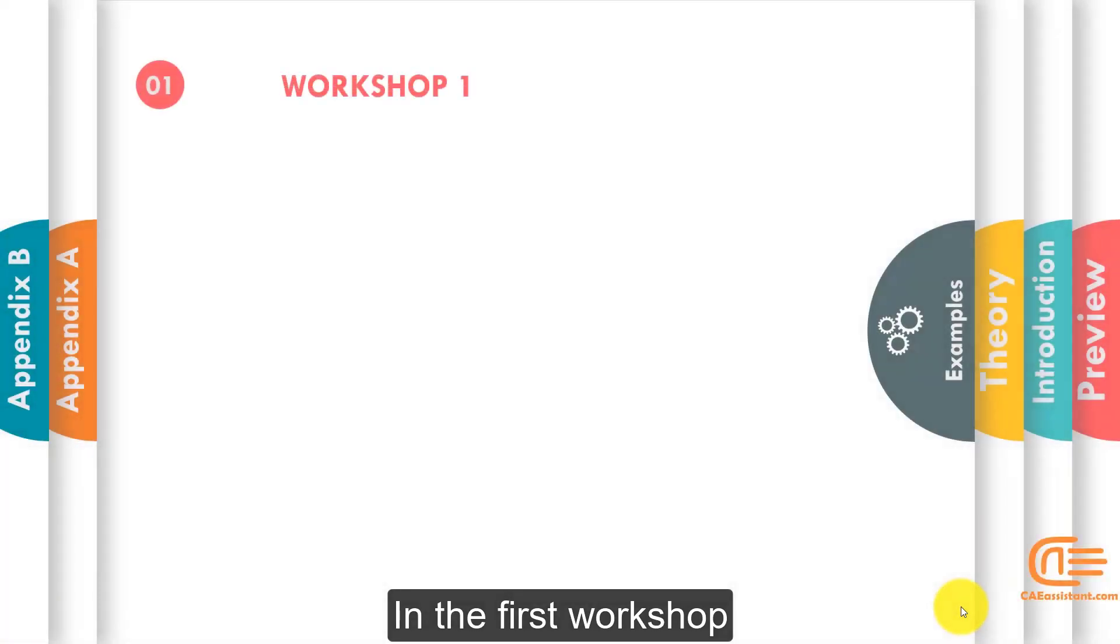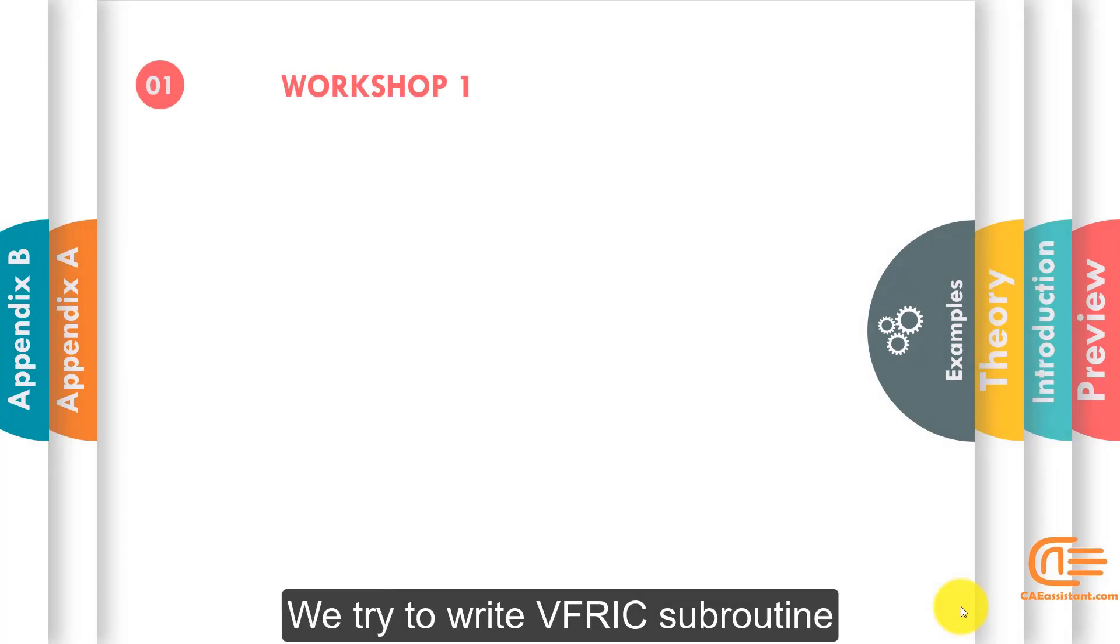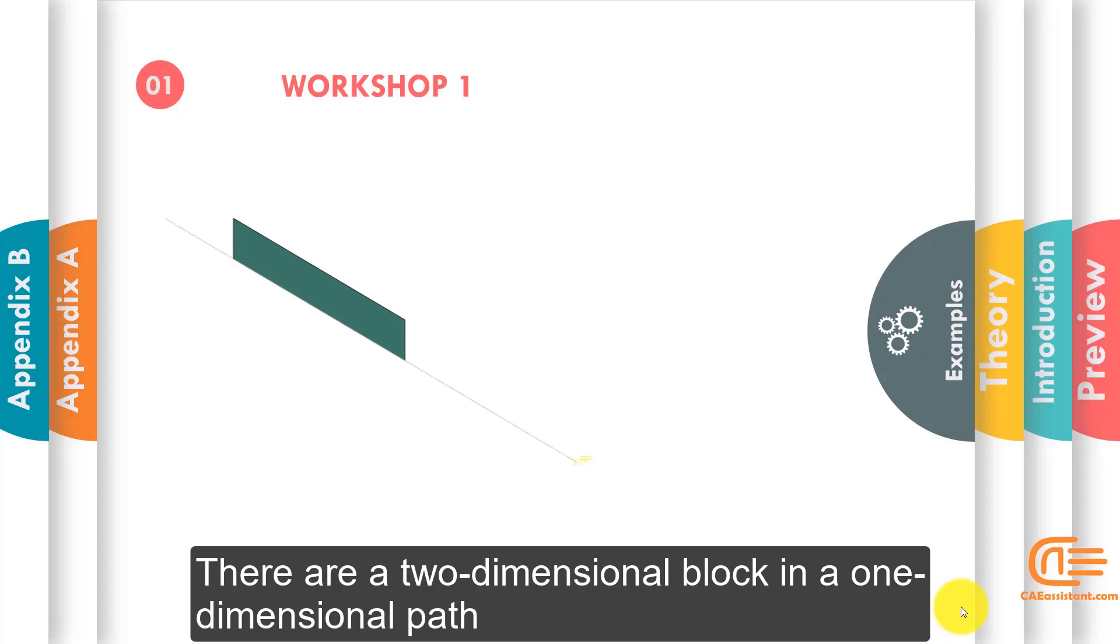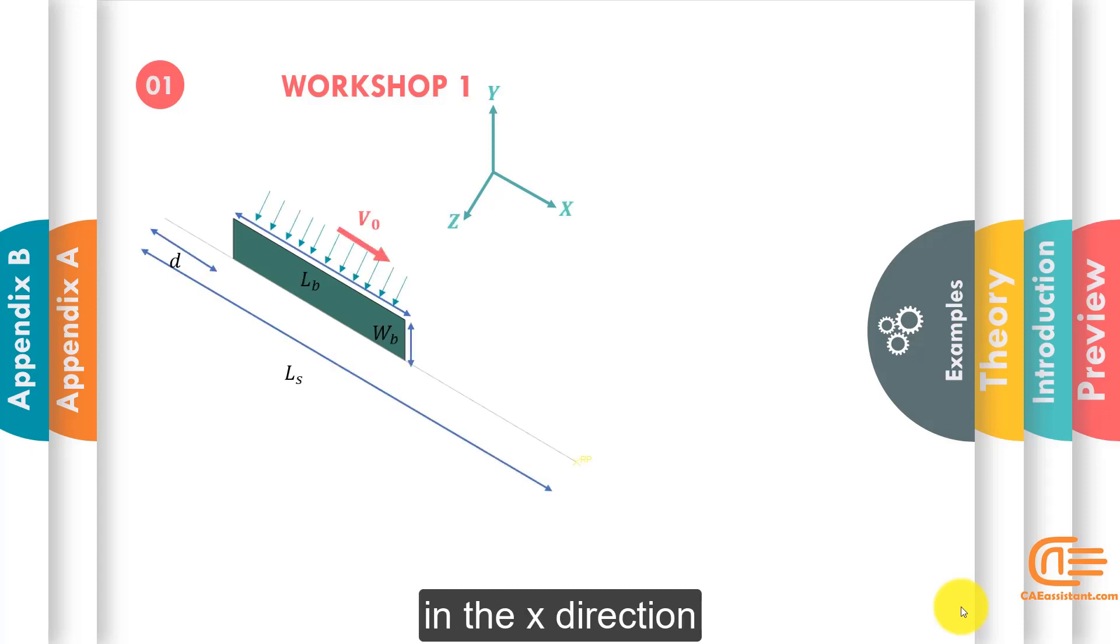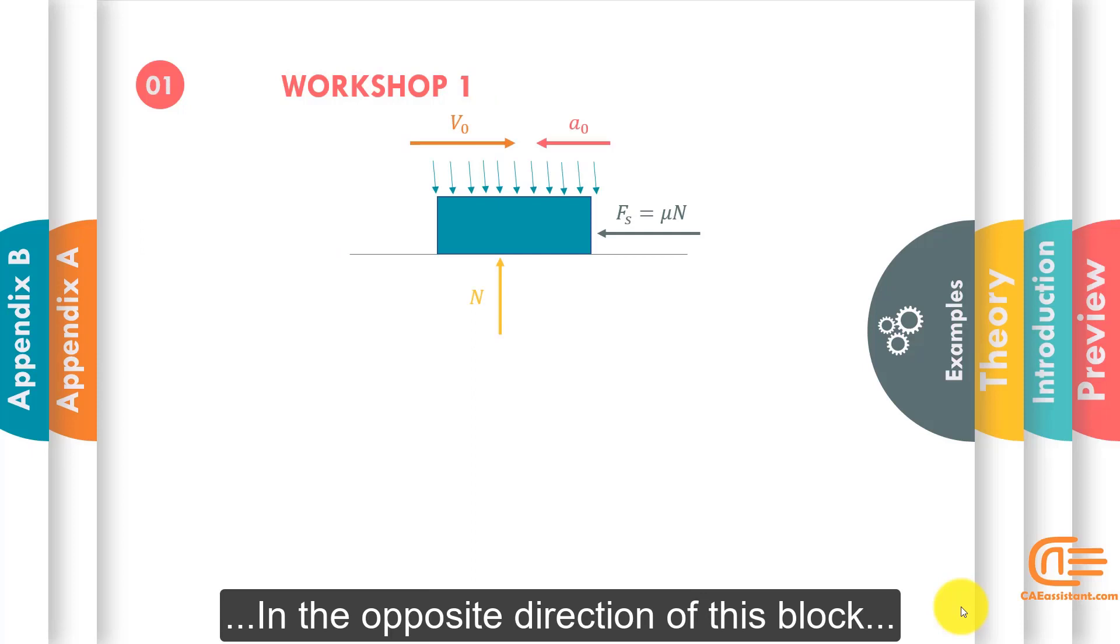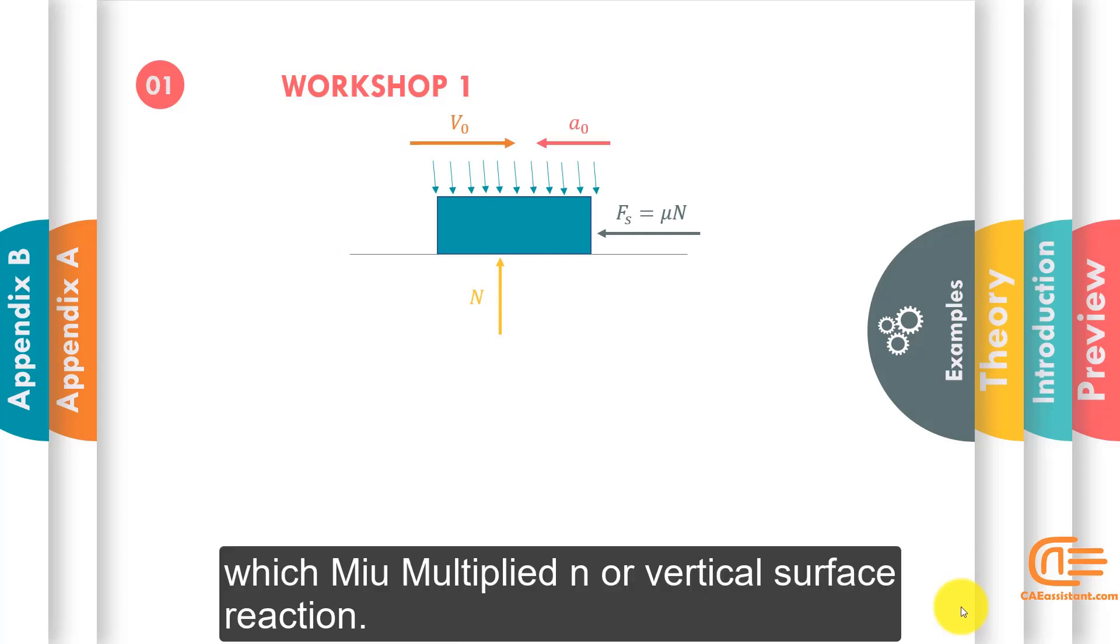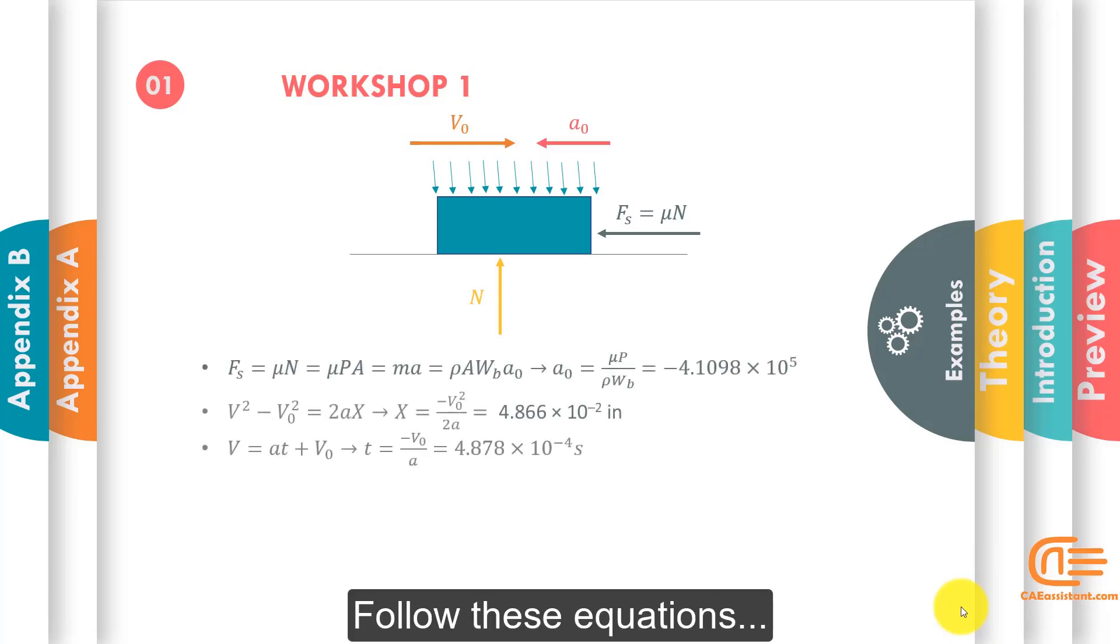In the first workshop, we try to write VFRIC subroutines. There are two-dimensional blocks in a one-dimensional path with initial velocity in the x-direction in the opposite direction of this block. The friction force equals mu multiplied by N, the vertical surface reaction, following the equations.